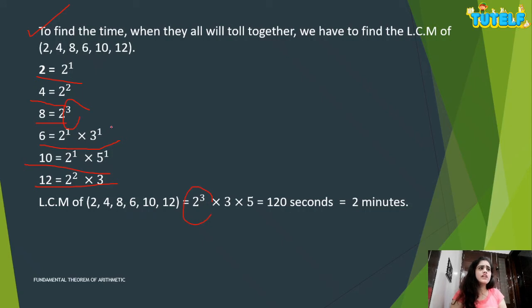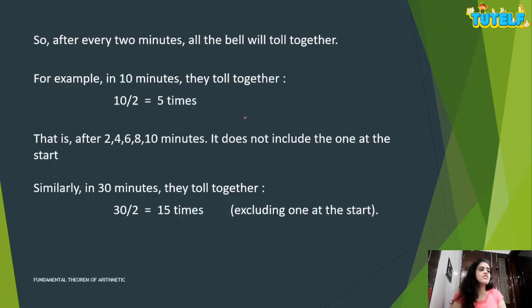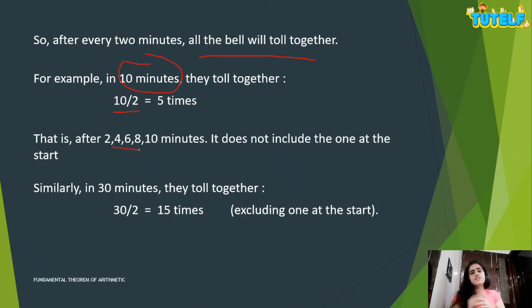So all six bells toll together every 2 minutes. In 30 minutes, they toll together 30 ÷ 2 = 15 times, excluding the one at the start.